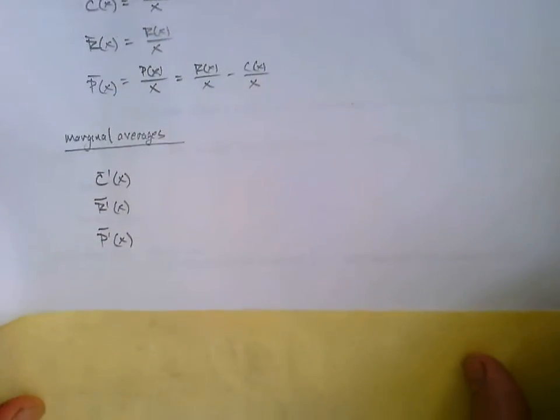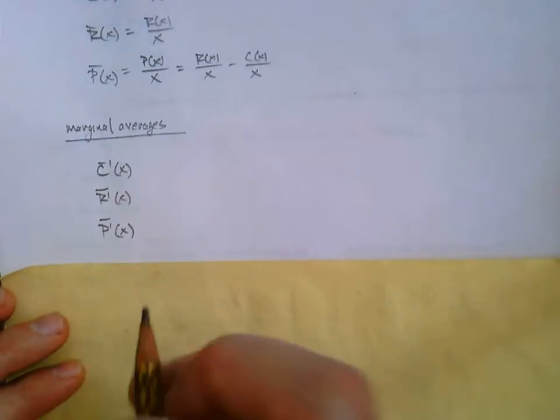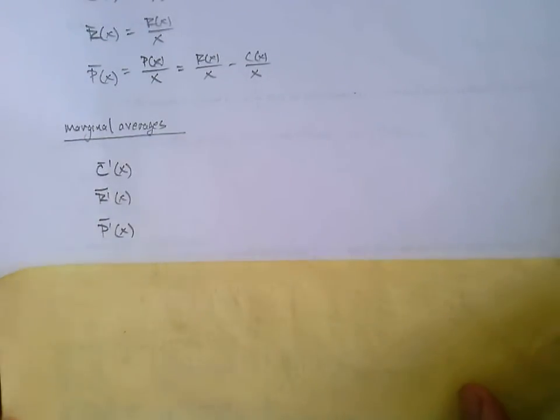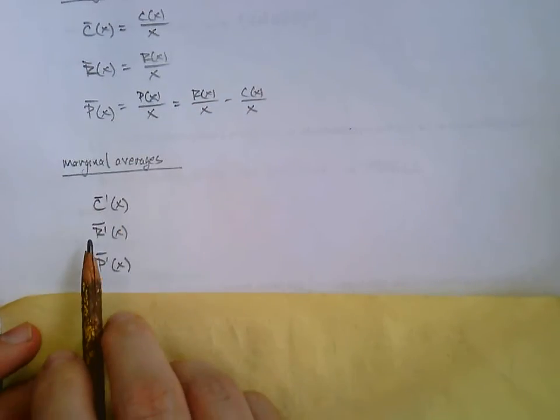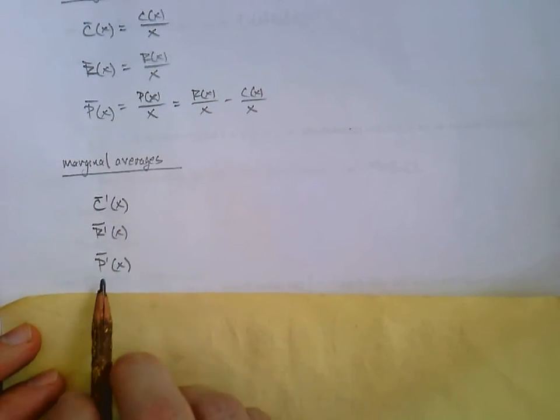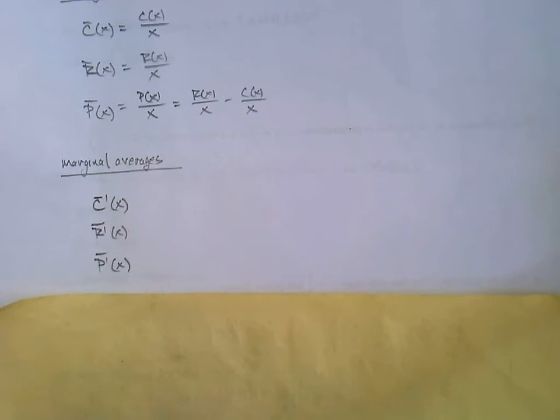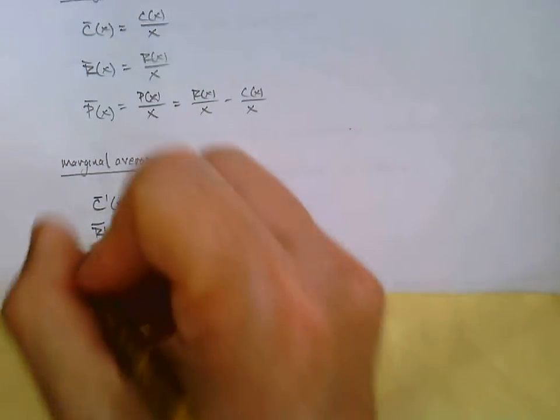And finally there's the marginal averages, so C bar prime of x, R bar prime of x, and P bar prime of x, like so.